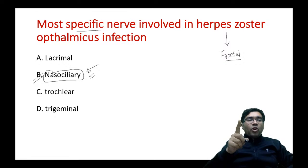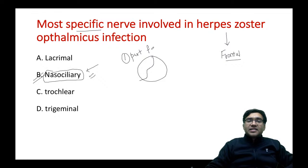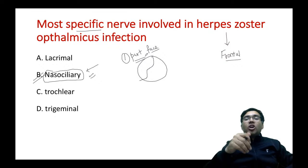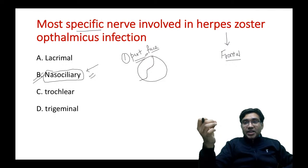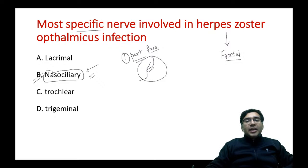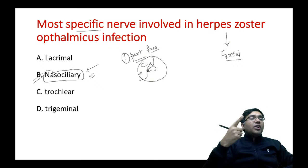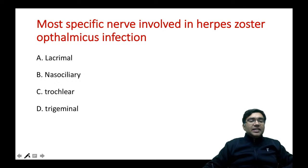An important point regarding herpes zoster ophthalmicus: it usually affects only one part of the face. If both parts of the face are involved, this is probably not HZO. When the tip of the nose is involved, the eye also gets involved — this is called Hutchinson's sign.